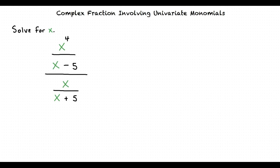Let's take a look at the problem we will be working through. We are given x to the 4th over x minus 5, divided by x over x plus 5. We are asked to solve for x. I see both the numerator and denominator contain fractions. How do we go about solving for x?